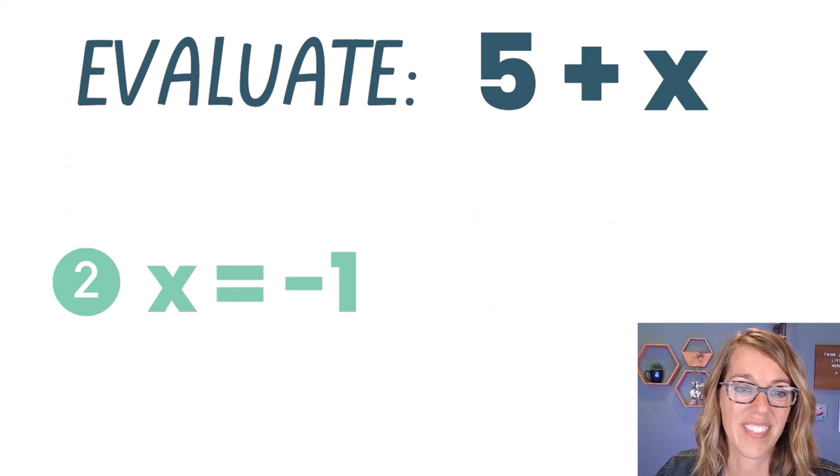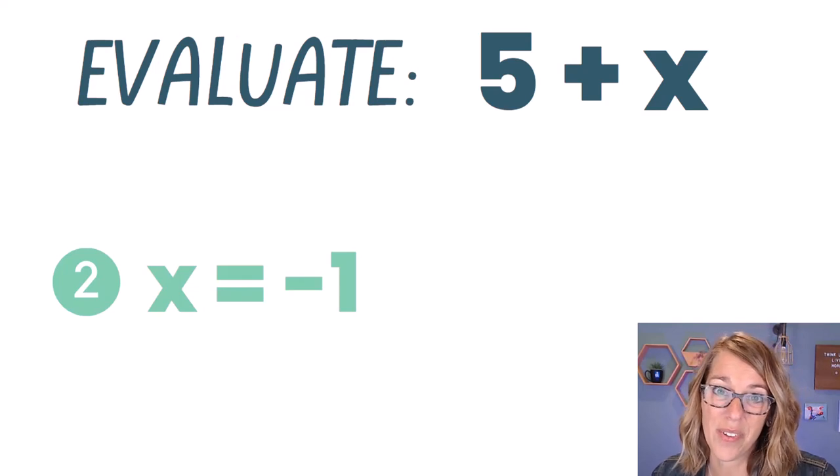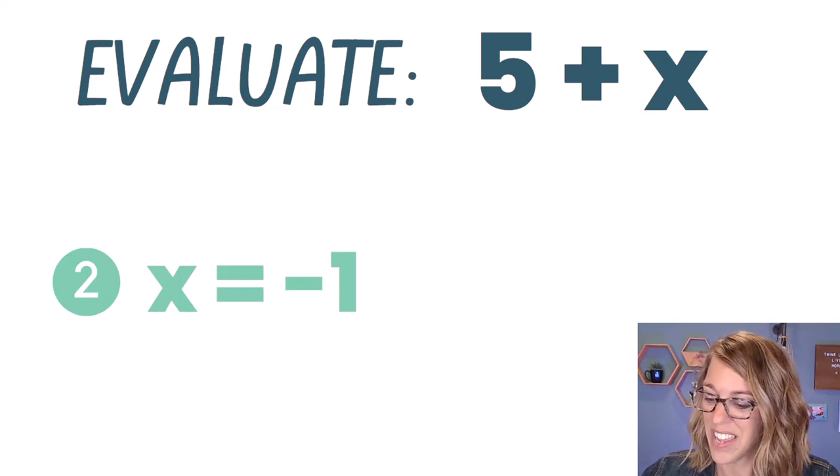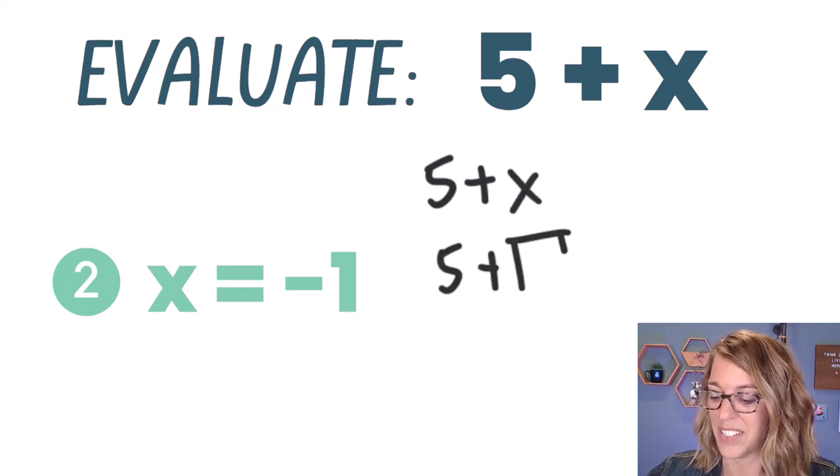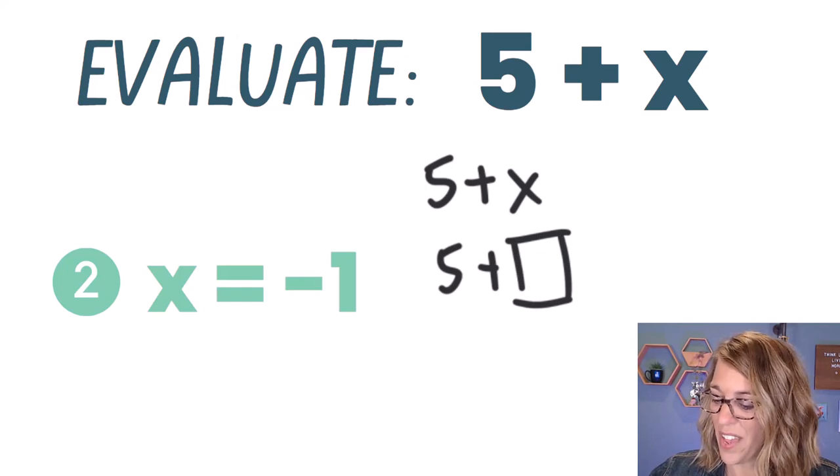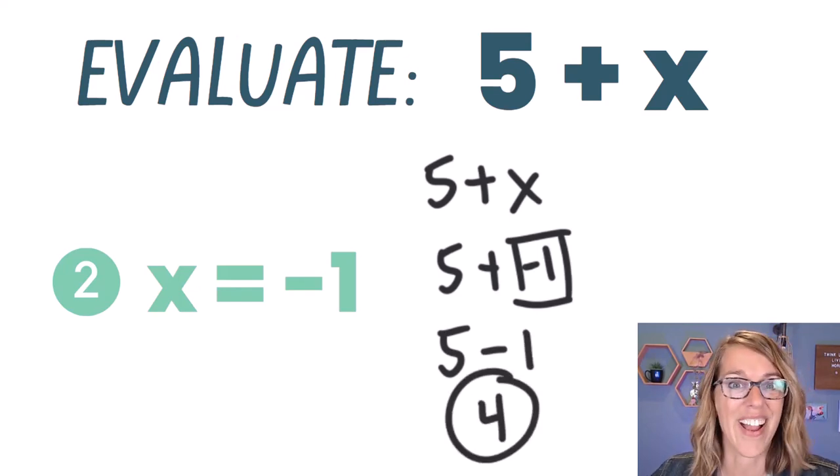Let's do the next one. The next one is X equals negative one. See if you can do this one and then you can follow along with me as well. So again, I'm going to think of that 5 + X as 5 plus whatever value I'm letting X be. And in this case, that value is a negative one. So I can do 5 minus 1, and that value is equal to four. How did you do?